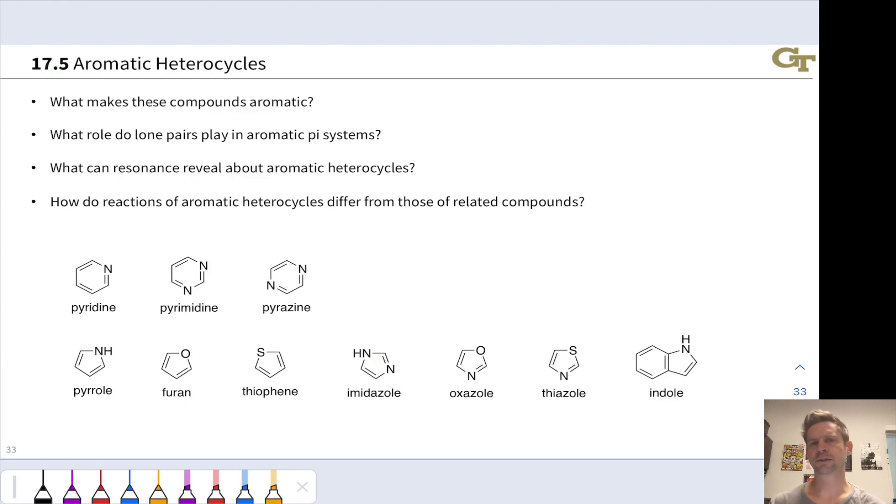With aromatic heterocycles, some interesting questions arise. The basic question of what makes these compounds aromatic: Huckel's rule and all of those criteria we've seen previously still apply, but there are some wrinkles with the lone pairs brought in by heteroatoms. We want to know what role do those lone pairs play? Are they part of the aromatic pi system or not? Are they basic, Bronsted or Lewis basic or not? What can resonance reveal about aromatic heterocycles? Those heteroatoms exert interesting effects by pushing or pulling electrons, and we can depict that using resonance. We'll think about aromatic heterocycles and reactions: How are they similar to aromatic hydrocarbons, and how are they different?